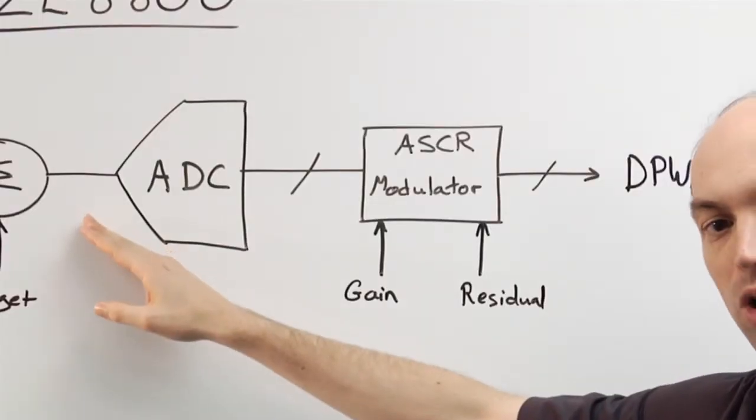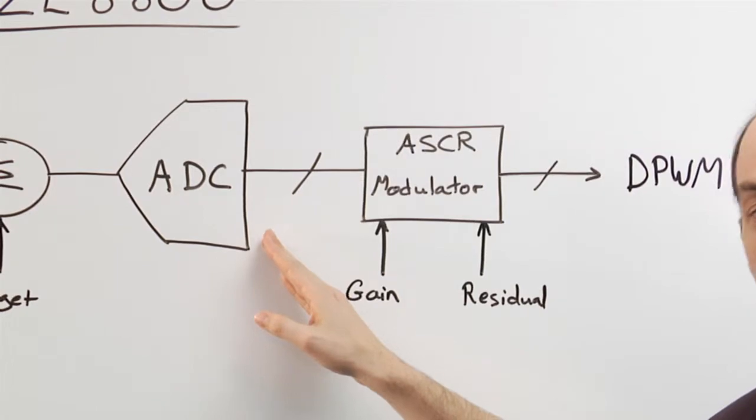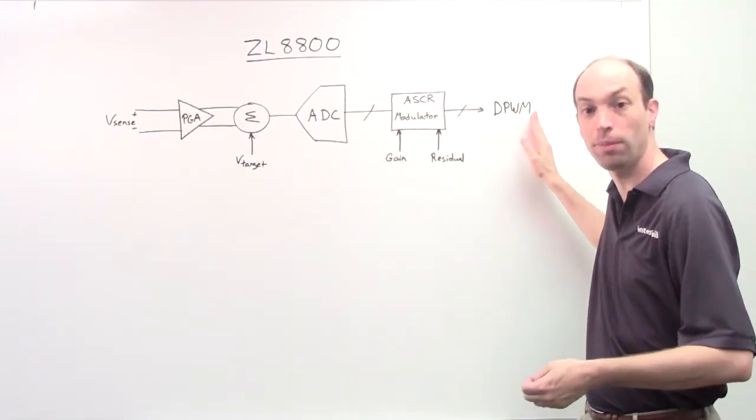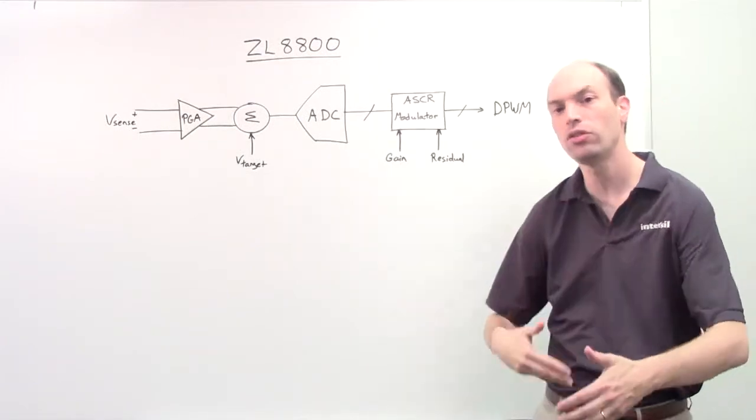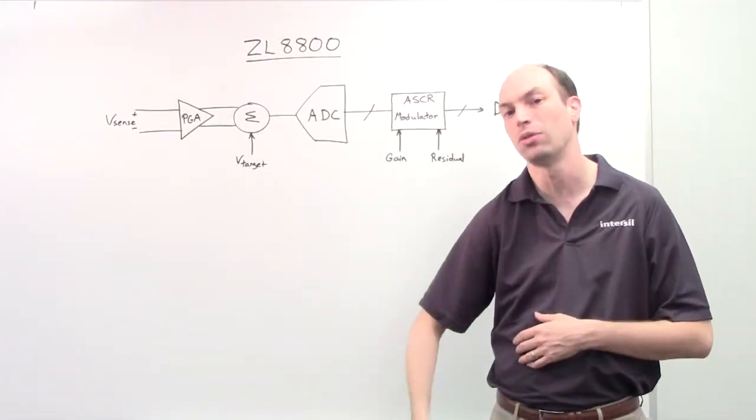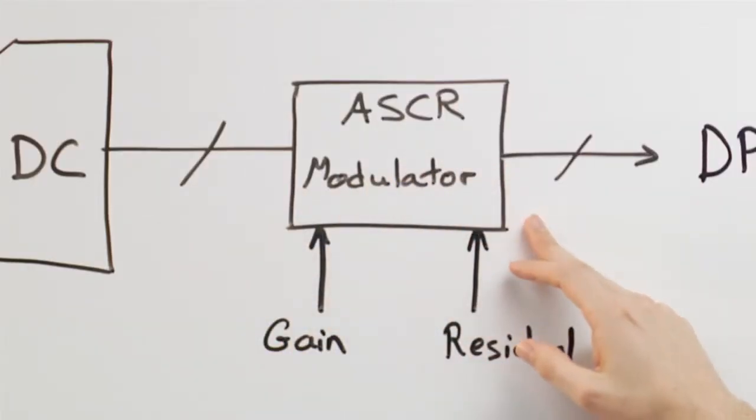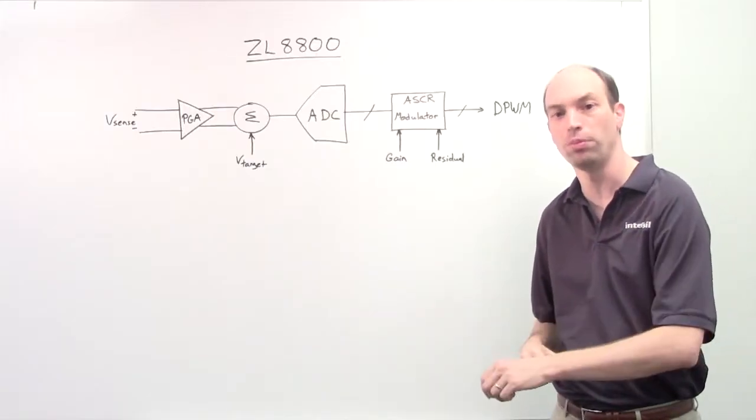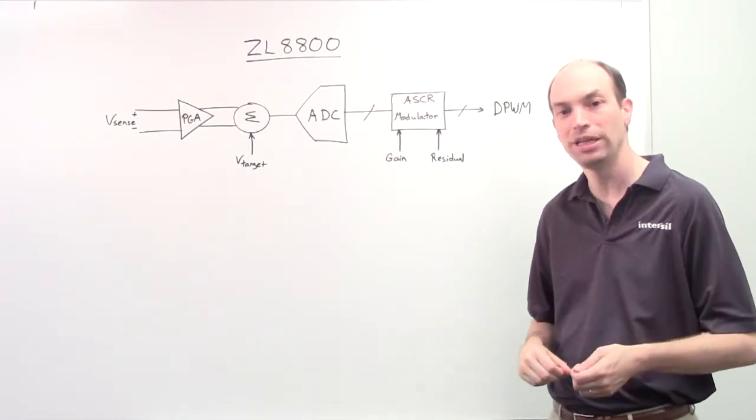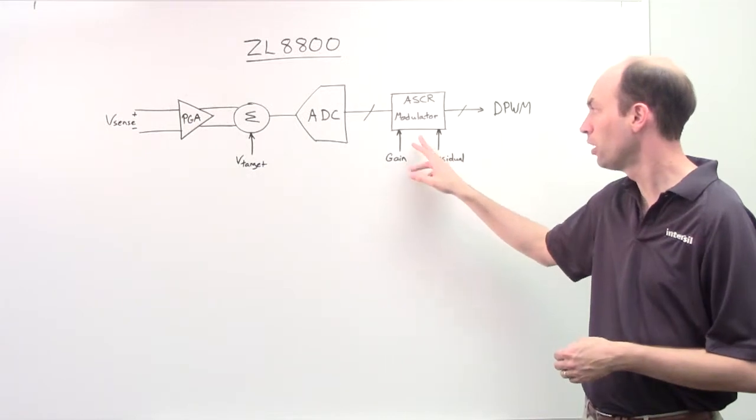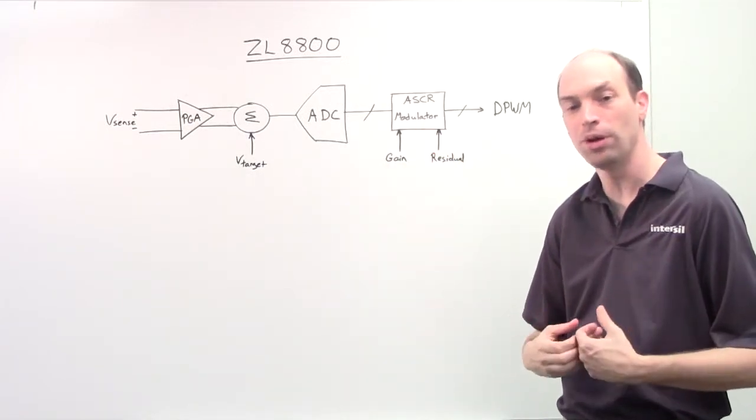The next stage is we quantize the error voltage using our high speed ADC. From this point on all the way to the gate drivers, we're going to be in the digital domain. This gives us a lot of flexibility to use non-linear loop compensation. In order to achieve this and ensure stability of the system, we use something called an ASCR modulator. That stands for single cycle response. It's a high speed, high bandwidth loop control that's used to adjust the DPWM.